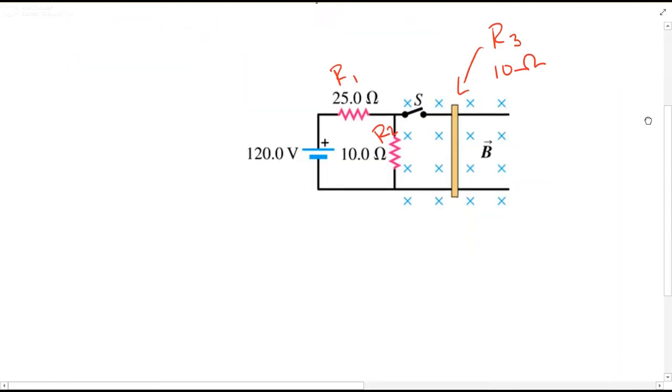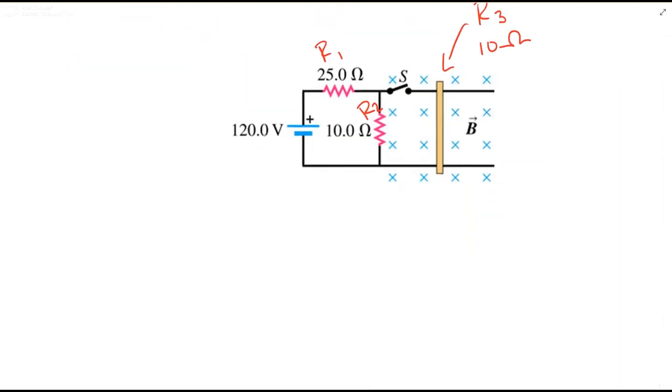Now we'll combine them to get an equivalent resistance and start actually doing math. We know that R2 and R3 are in parallel.